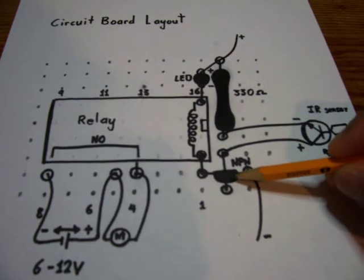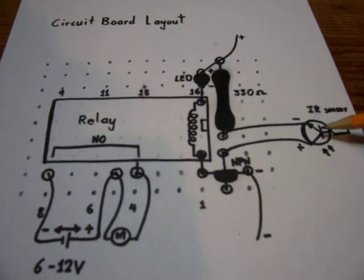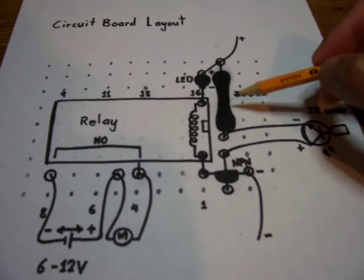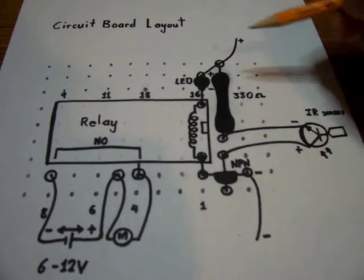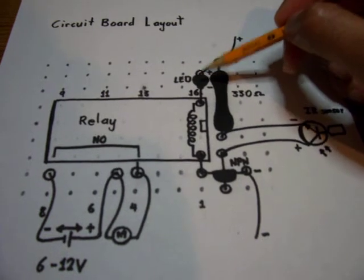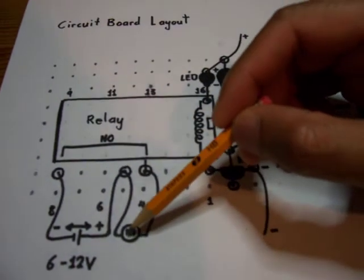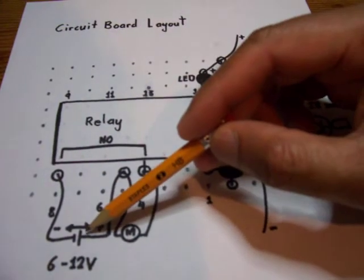This is an NPN transistor. This is an infrared detector. This is a resistor that's 330 ohms. This is a green LED. This is a relay. This is a motor. And this is a battery.